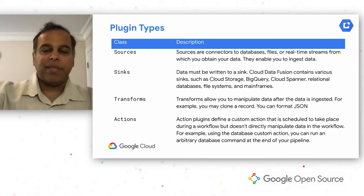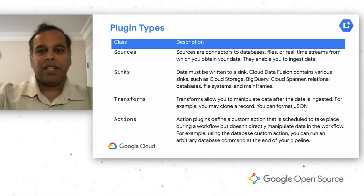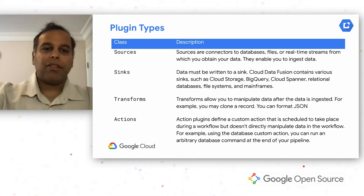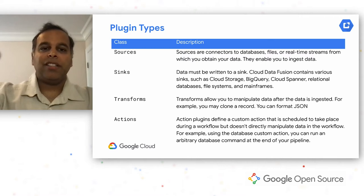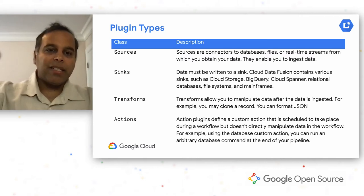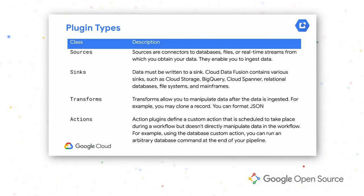Let's talk about the different plugin types CDAP supports. Sources let you create plugins that read from a particular data source — it could be a database, a file, a data lake, or an application like Salesforce. Next, once your data is there, you want to write it somewhere — that's what we call a sink. You can have plugins writing to GCS, BigQuery, or extend to write to your own sink.